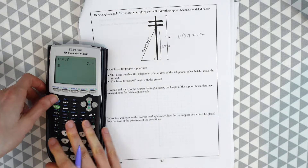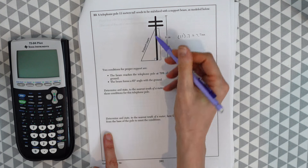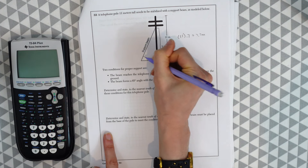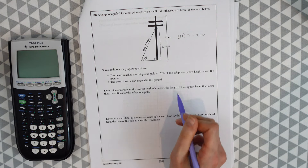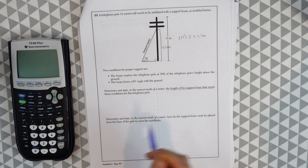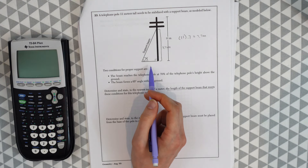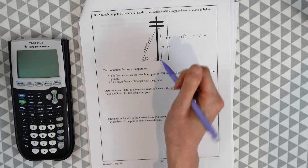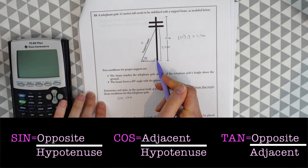We know this height of the triangle is 7.7 meters. The beam also forms a 65-degree angle with the ground — that's the angle at the base of the triangle. The first question asks us to determine and state, to the nearest tenth of a meter, the length of the support beam. The support beam is the hypotenuse, and I'll label that x.